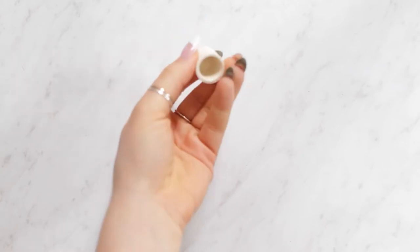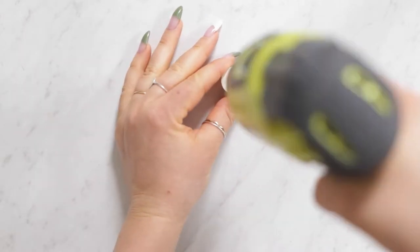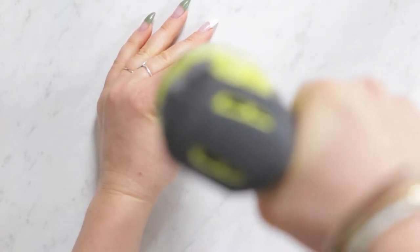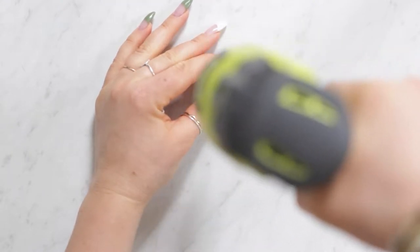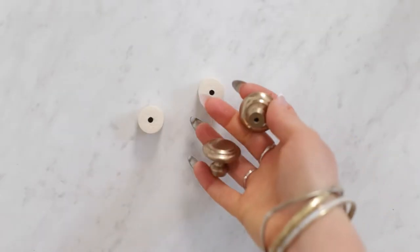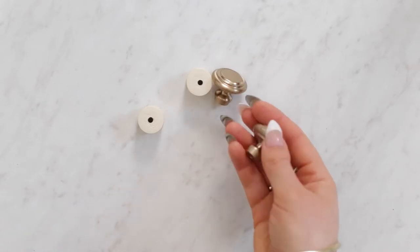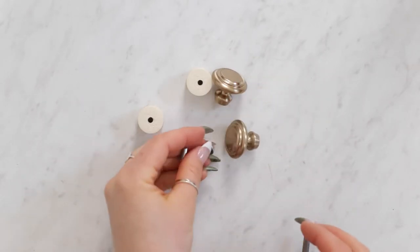Then I just used a PVC end cap and drilled a hole in the center to create an end piece for the curtain rod. Then I found some affordable decorative knobs and attached those to the PVC pieces on the end.